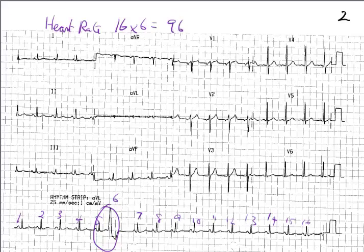The next thing to do is to determine the rhythm, and that's what this ECG is about. There's obviously a beat that's strange — this one here, which we've already highlighted. It is out of place. Because it's early, it's called an ectopic. So that beat there is an ectopic.